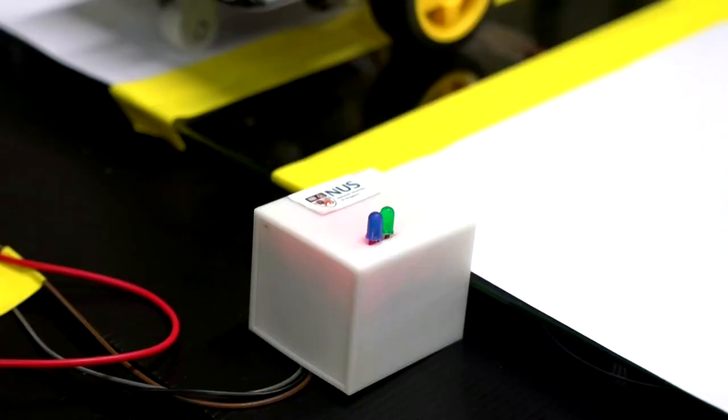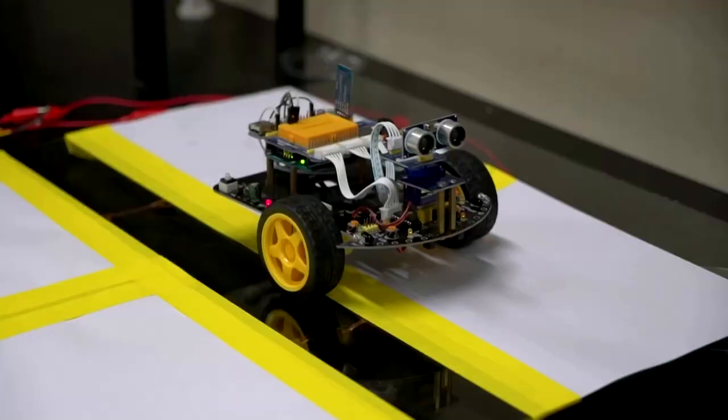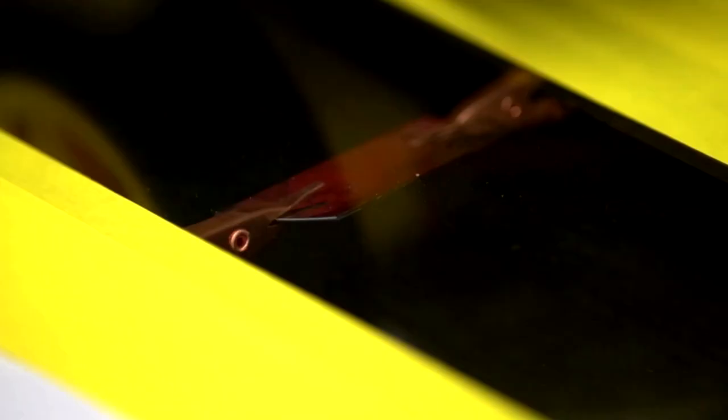Our shadow effect energy generator can also be used as a motion detector. As the car passes over the first piece, the blue LED light will light up. And if the car passes over the second piece, the green LED light will light up.